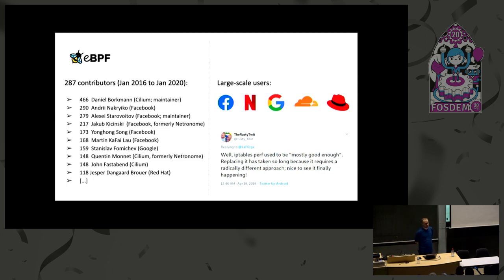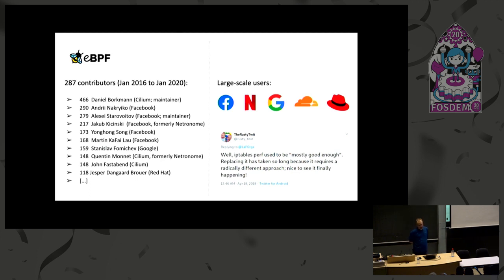Facebook runs BPF in production on all their infrastructure — whenever you hit facebook.com, you go through BPF. Netflix uses it at large scale for tracing. Google uses it for traffic shaping to optimize their TCP stack. Cloudflare uses it for their load balancer and DDoS protection in production. It's even available on RHEL kernels, meaning it's now mainstream. Even the old IPTables maintainer Rusty Russell admits that IPTables used to be good enough, but these days it needs a radical shift — and that's basically BPF.